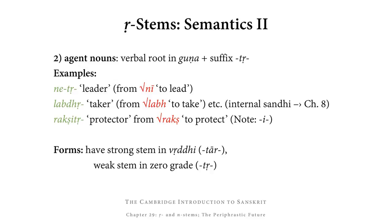Note that we have an i appearing between the verbal root rakṣ and the TR. This is the same kind of i that we've also seen appear before other suffixes beginning with T — such as tum (the infinitive), tā (the tā-participle), tvā (the gerund), and so on. These agent noun forms have their strong stem in vṛddhi, so ending in tār, and their weak stem in zero grade, ending in tṛ.